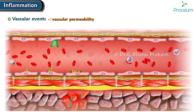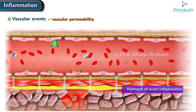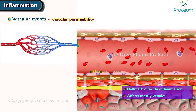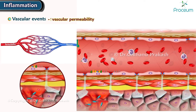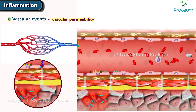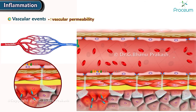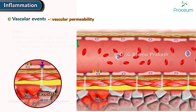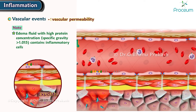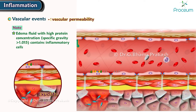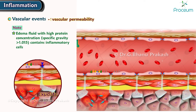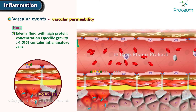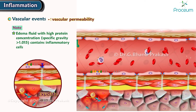Lastly, there's increased vascular permeability. This is the hallmark of acute inflammation. It mostly affects venules and occurs due to the formation of endothelial gaps. This leads to the formation of a protein-rich fluid known as exudate — an edema fluid with a high protein concentration and a specific gravity of greater than 1.015, which frequently contains inflammatory cells.